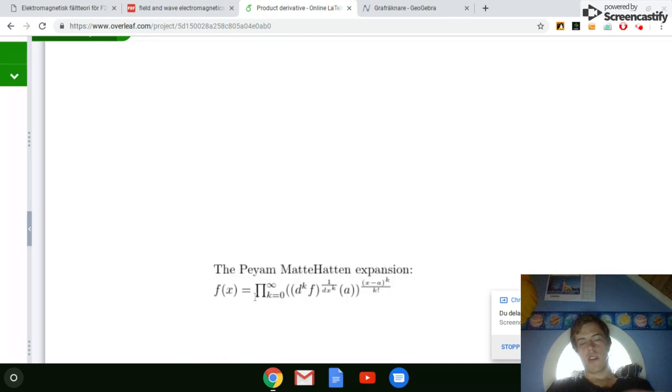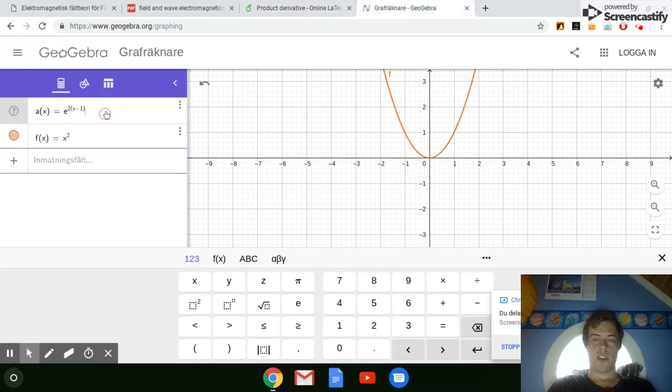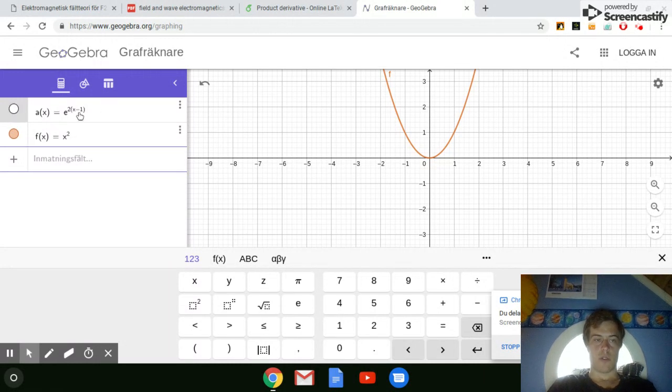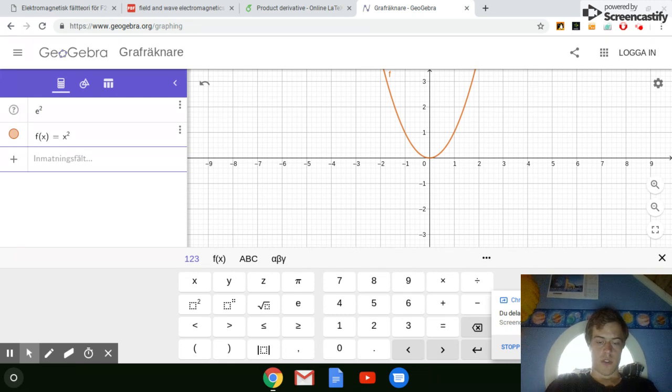And I just want to show what some terms of it looks like. So we already have this approximation for x squared, e to the power 2 x minus 1.